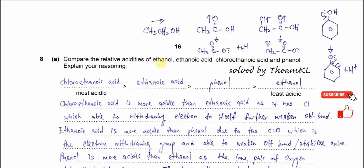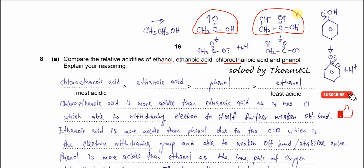So now we have four different compounds with different acidities. Which one is the most acidic? We have two carboxylic acids here: ethanoic acid and chloroethanoic acid. So which carboxylic acid is more acidic?